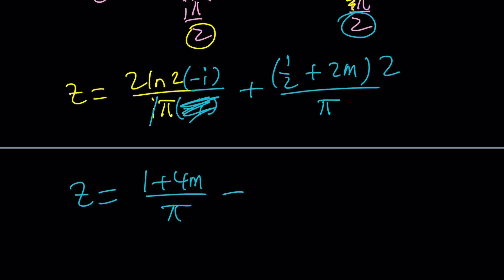And then minus i times 2 ln 2 divided by pi. Interesting that we have a pi at the bottom, right? Cool. So now,